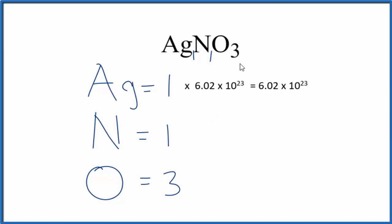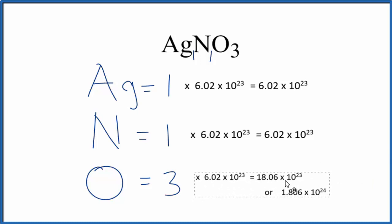We can do the same thing for nitrogen. We have one times Avogadro's number, which gives us 6.02 times 10 to the 23rd nitrogen atoms in AgNO3. And finally, for oxygen, we multiply by three. Three times Avogadro's number gives us the number of oxygen atoms.